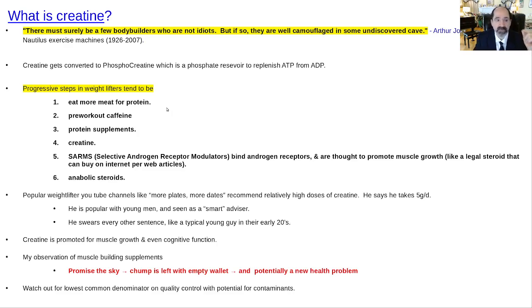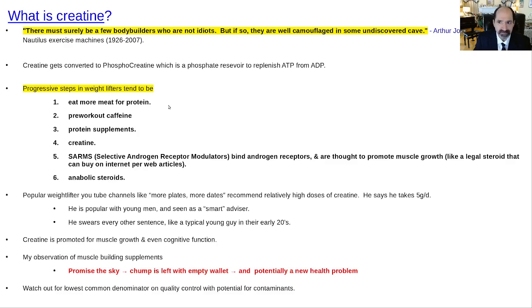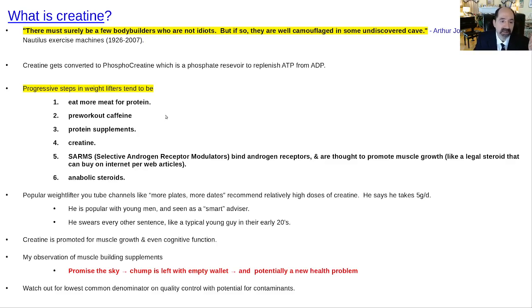The next thing is protein supplements, and protein supplements are really bad — I think much worse — because they have a tendency to put guys at increased risk for kidney failure. You've got to worry about quality control. When you eat a food made by nature, there's at least some quality control. Stuff made by supplement companies — you don't know who's making it. The next step up is they start taking creatine, and that's what we're going to talk about today.